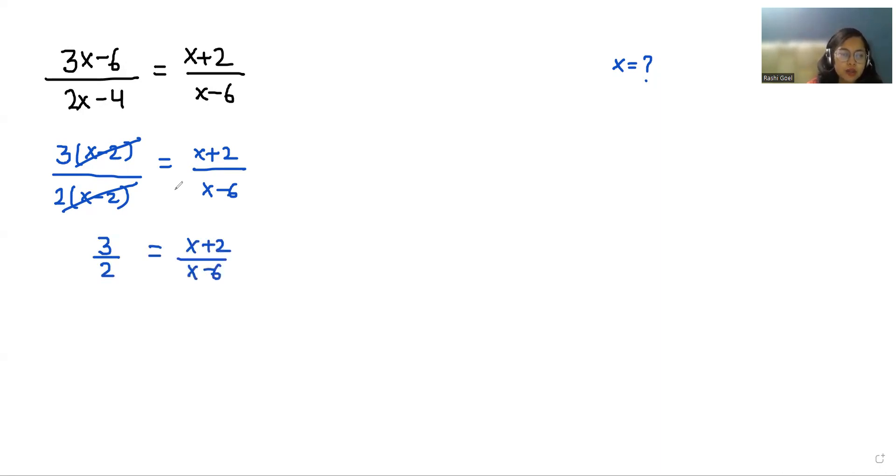Now we can do the cross multiplication method. So 3 times (x-6) equals 2 times (x+2).